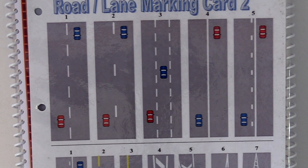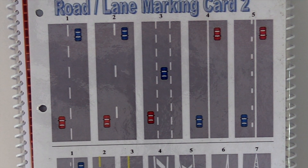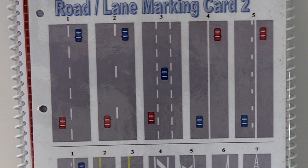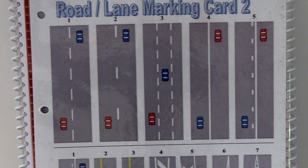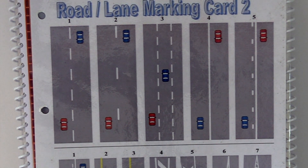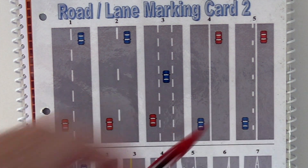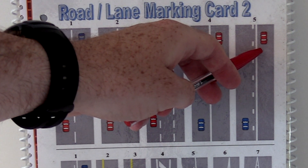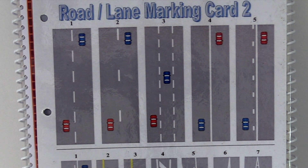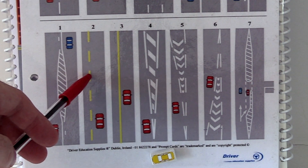The continuous white line means you're not allowed to cross or pass it unless for access or in an emergency — no overtaking, no passing. You obey the line closest to you: the blue car could cross if it's safe because it has a broken white line nearest, but the red car should not cross or overtake because it has the continuous white line closest to it.